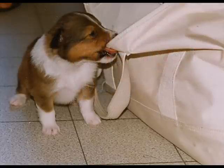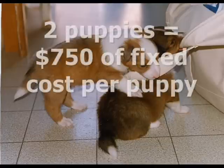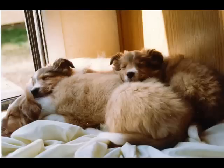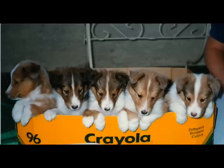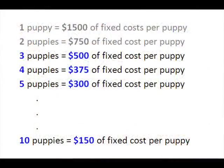Even ignoring the variable costs, I would have to charge $1,500 just to break even for that puppy. What if I could produce two puppies? Two puppies means $750 of fixed costs per each puppy. What about three puppies? Or four? Or five? Or ten? The cost per puppy — that is, the average fixed cost — gets more and more attractive.